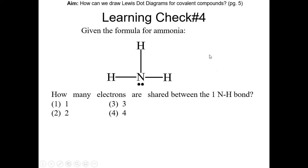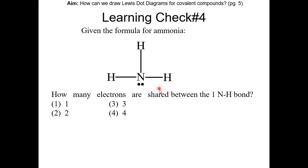Learning check number four: Given the formula for ammonia, how many electrons are shared between one N-H bond? Pause the video and resume once you're done. One N-H bond is a single bond, which is two electrons. So the answer is choice two.